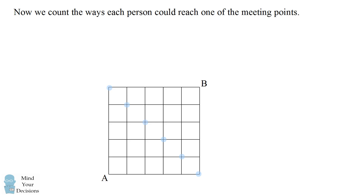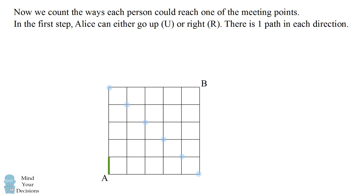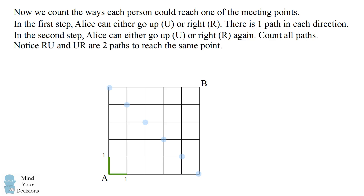We now need to count the number of ways each of them could reach one of these meeting points, starting with Alice going from point A. In the first step, Alice can either go up or right — there's only one way she could reach each of those adjacent points. In the second step, she can go up or right again. Going up twice or right twice each has one path, but the diagonal point can be reached in two different ways.